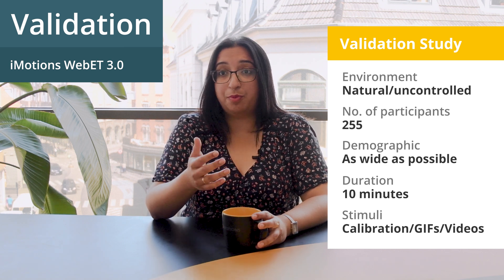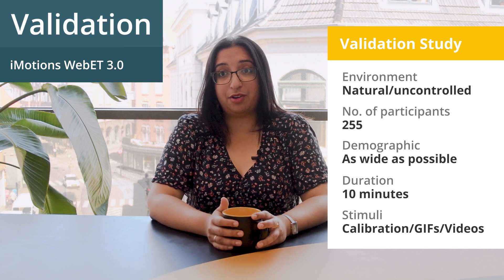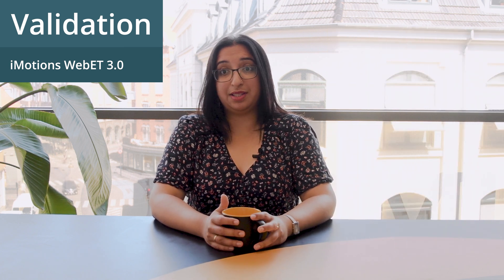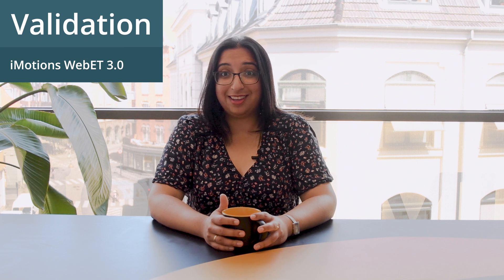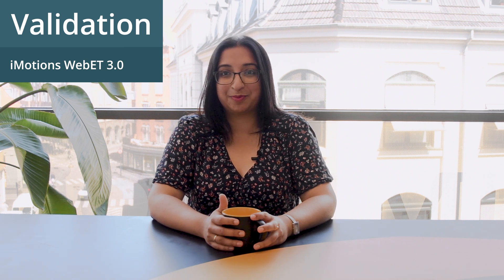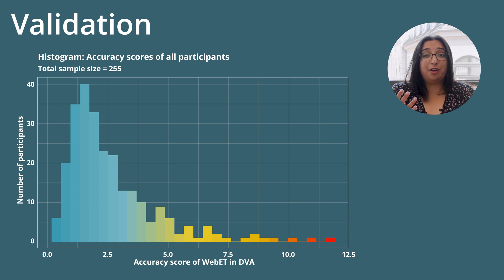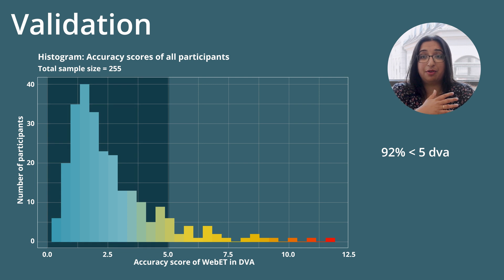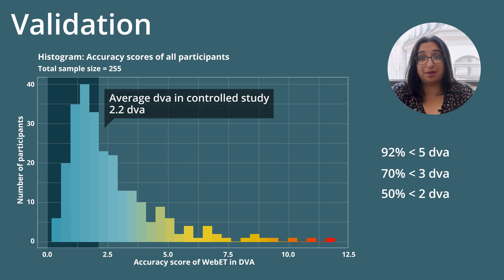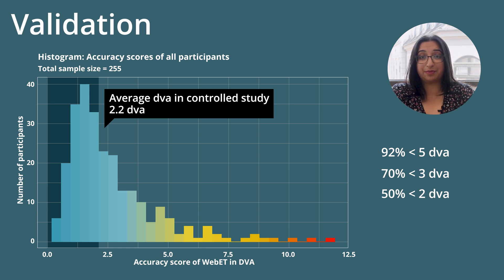Most of the participants had no prior experience with eye tracking studies and would therefore not have been aware of the importance of sitting still for the entire duration. We didn't know what to expect, but luckily the accuracy was still holding up even with no control over the environment or participants. Out of the 255 participants, 92% had an accuracy below 5 DVA, 70% below 3 DVA, and 50% had a DVA less than 2 — very impressive given our controlled study average was 2.2 DVA.